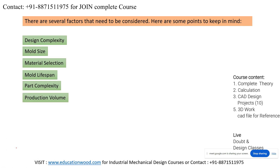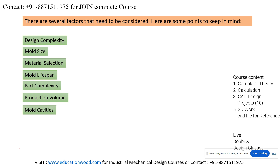Production volume also affects mold costing. If the production volume is high, the cost per part decreases, but you need hardened material to sustain that volume. Depending upon the production rate, we have to choose materials accordingly. Also, mold cavities and surface finish requirements — what finish is required for the component — all these factors will affect the mold costing.